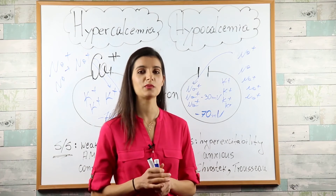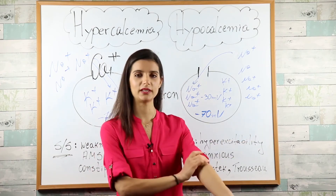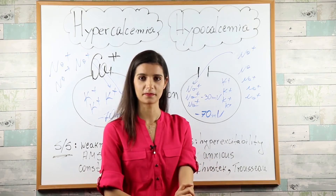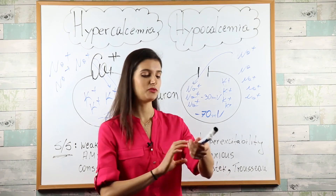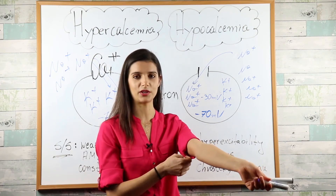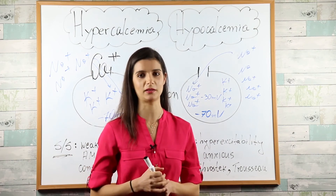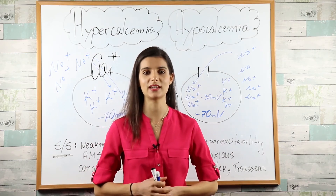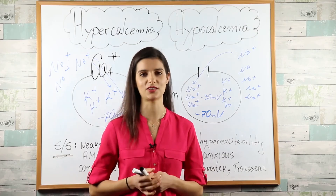Now in Trousseau's sign we observe constant carpal spasm by putting a blood pressure cuff and inflating it. Why is this happening? In hypocalcemia you still have a little bit of calcium flowing around, but if you cut the blood supply to your distal arm by inflating the blood pressure cuff, from having less calcium you end up having no calcium. That's why we see this sustained carpal contraction. And this was the explanation of how hypo- and hypercalcemia give you the physical presentation we observe.